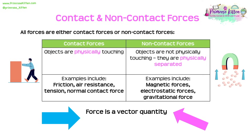All forces are either contact forces or non-contact forces. Contact forces are experienced when objects are physically touching. Some examples include friction, where things are rubbing against each other, air resistance where the air is in contact with you, tension, and also the normal contact force. Non-contact forces involve objects that are not physically touching — they're physically separated, and yet they're still experiencing a force between them.